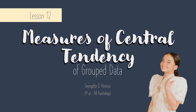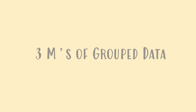Good day everyone! I am Georgie Tijonora and today we are going to tackle lesson 12, which is the measures of central tendency of grouped data. Measures of central tendency are basically the three M's, which are the mean, median, and mode. Unlike in ungroup data, here we are going to be using a formula, and we must remember the steps so that we can determine the three M's.